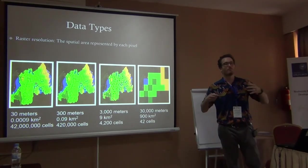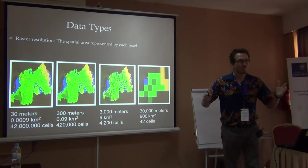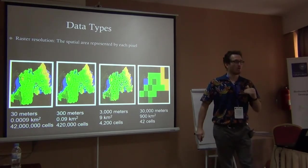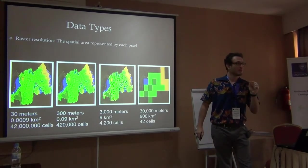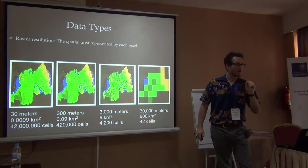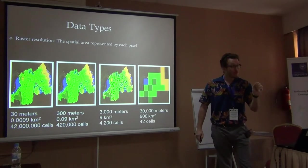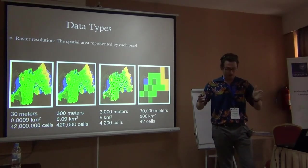High resolution means a smaller cell — if each cell represents one meter, then every meter gives us a new value, so we get a lot of detail across a small patch of land. This is the same raster of Rwanda shown at different resolutions. At 30-meter resolution, each cell has a width and height of about 30 meters, or 0.009 square kilometers, giving about 42 million cells total.